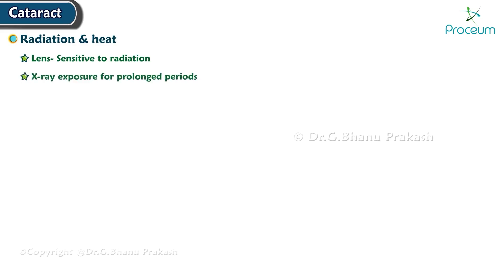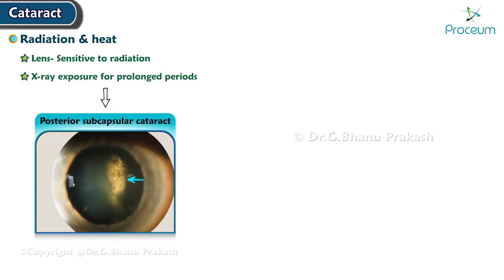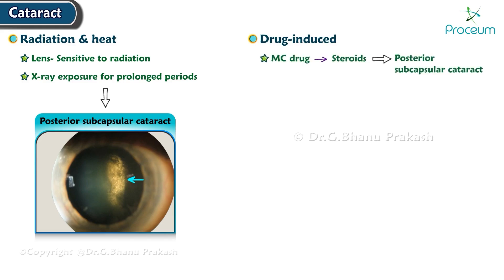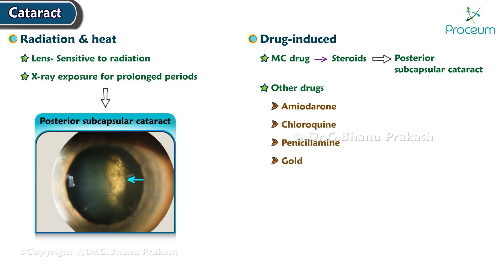Radiation and heat cataracts: the lens is most sensitive to radiation, and upon prolonged X-ray exposure, posterior subcapsular cataract develops. Drug-induced cataracts: the most common drugs causing cataract are steroids, leading to posterior subcapsular cataract. Other drugs causing cataracts include amiodarone, chloroquine, penicillamine, and gold.